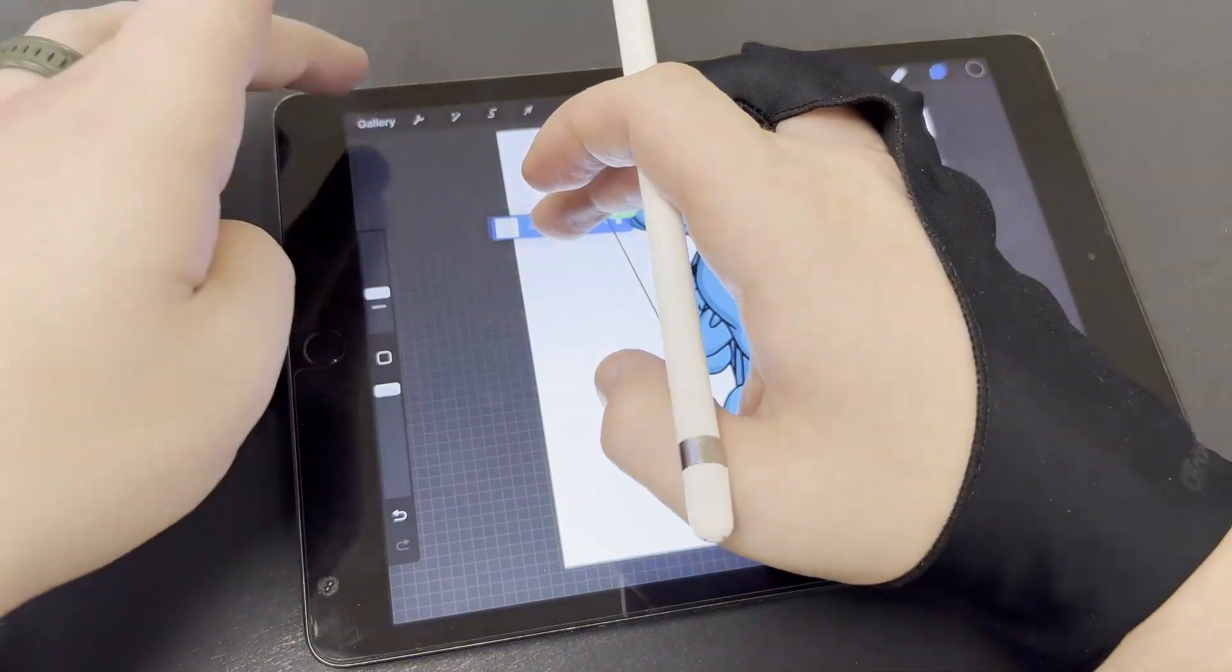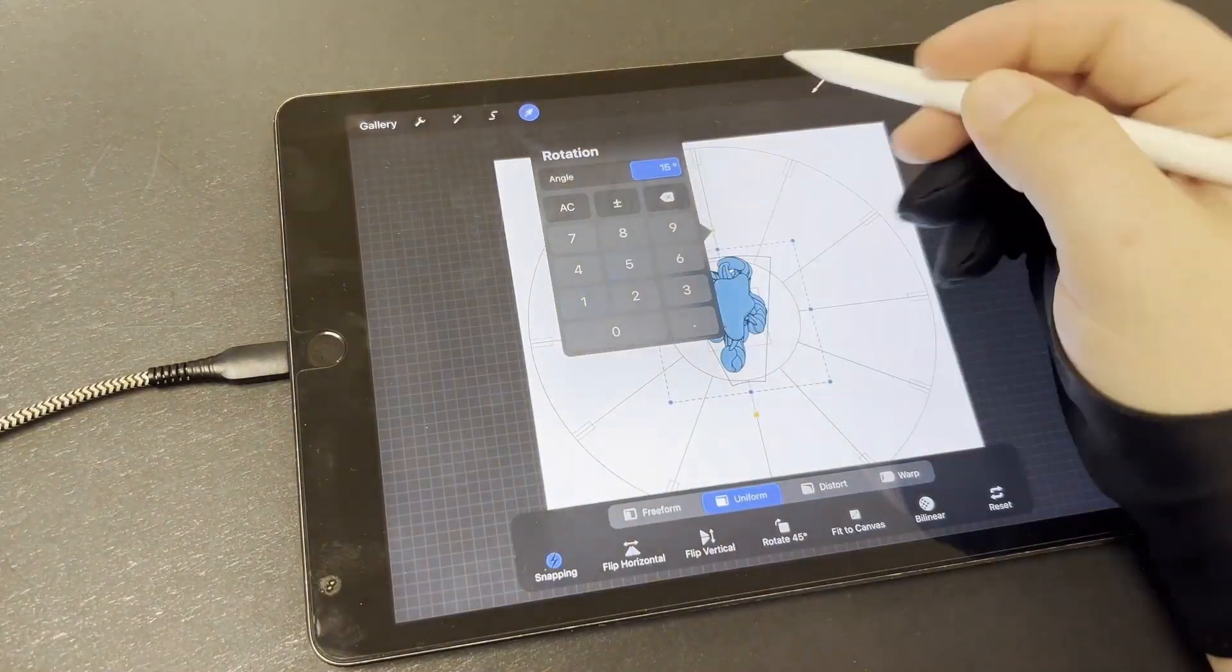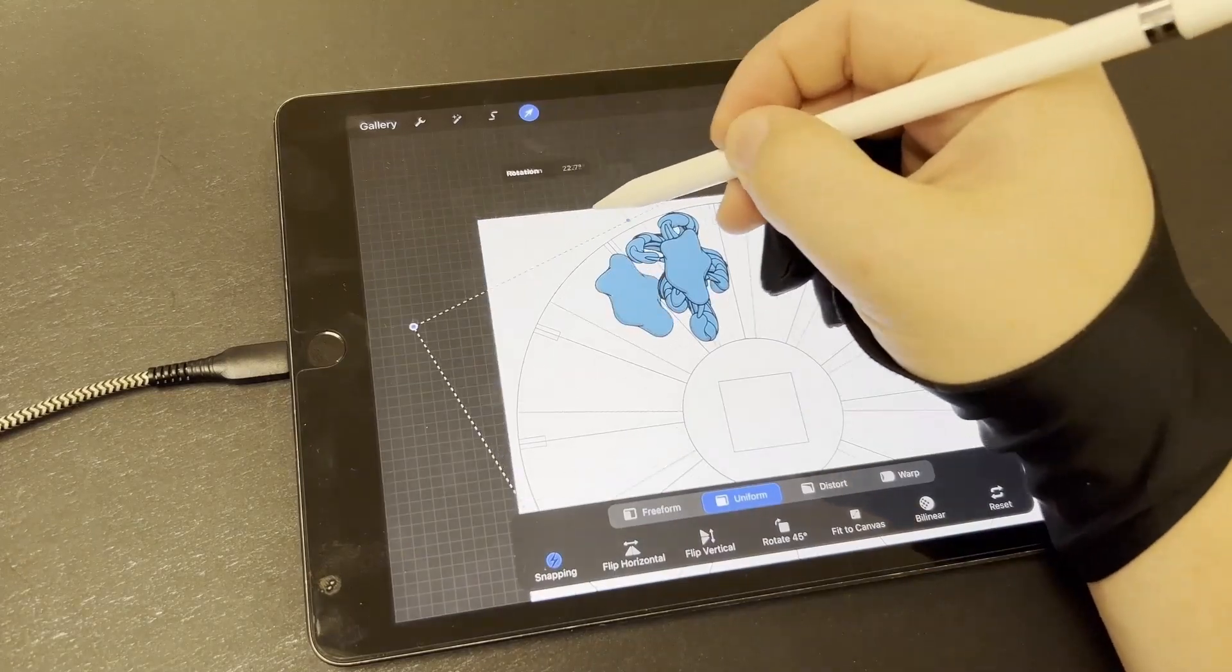Once I've finished the animation, I'll bring all the layers into a new document. I'll move each of the frames of the animation into each of the 12 sections around the disc.